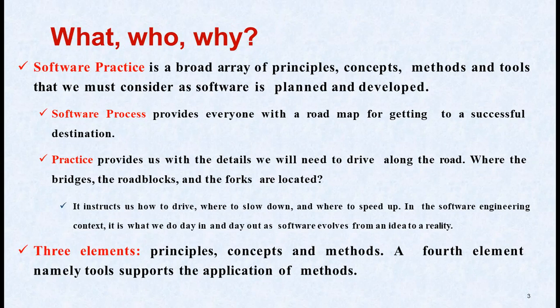Practice represents the details — the technical considerations and how-tos that are below the surface of the software process — the things we need to actually build high-quality computer software. In this video we list the generic framework: communication, planning, modeling, construction and deployment, and umbrella activities — tracking, risk management, reviews, measurement, configuration management, reusability management, and the product activities found in all software process models.